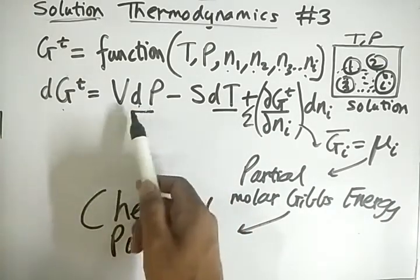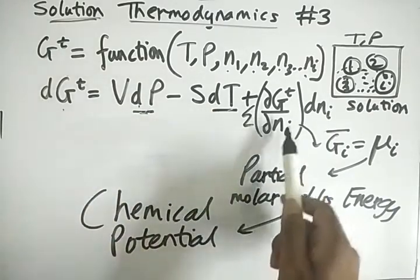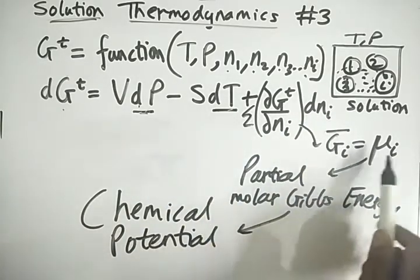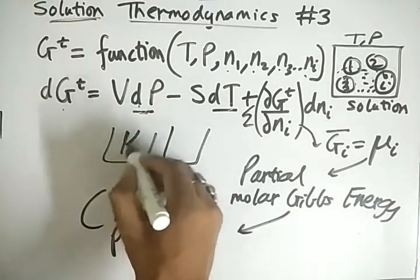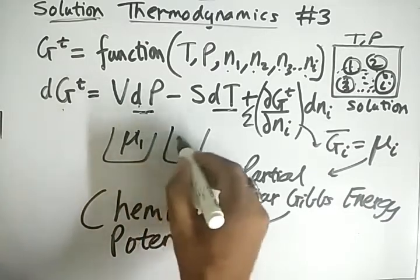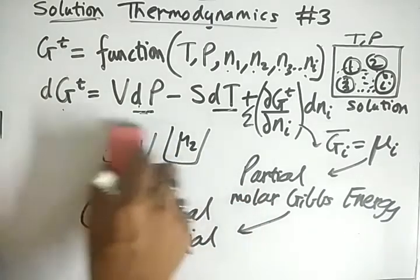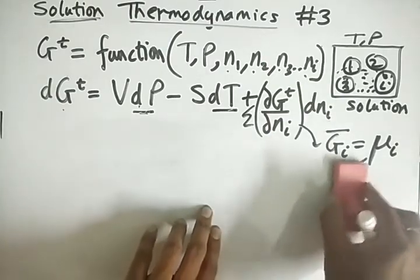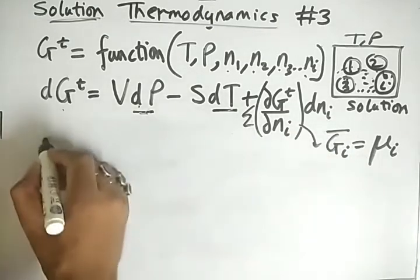What does chemical potential signify? del P signifies mechanical equilibrium — if del P is zero there is mechanical equilibrium; if del T is zero there is thermal equilibrium; and if del ni is zero we have chemical equilibrium. So mu-i is the chemical potential. If two systems have different chemical potentials, we can identify how much movement or transfer can take place between them when they come together.